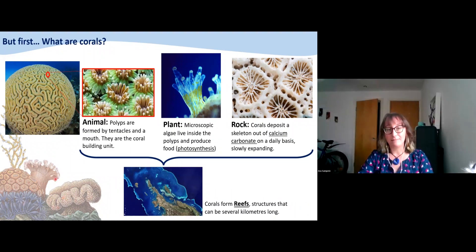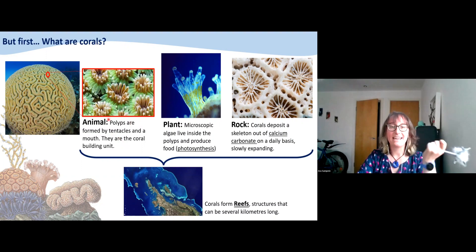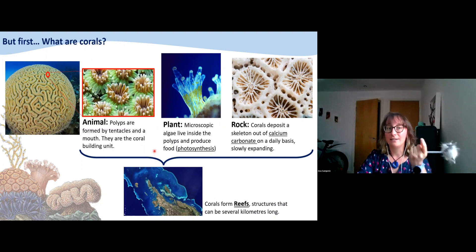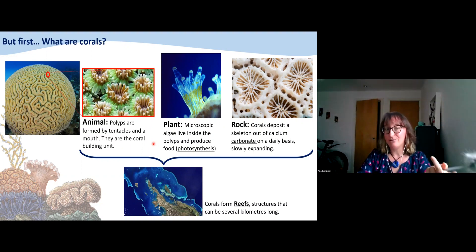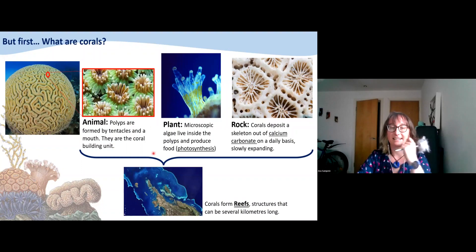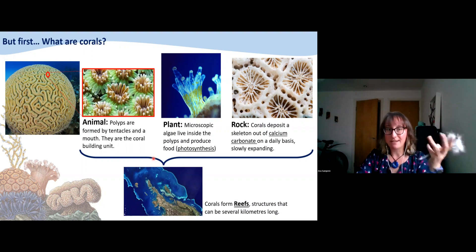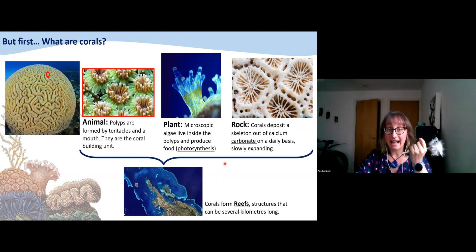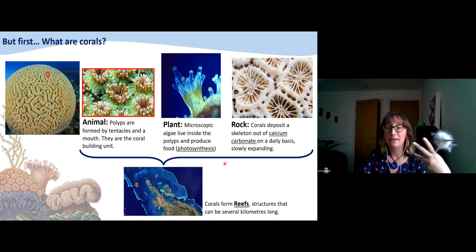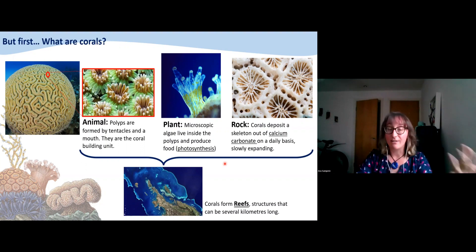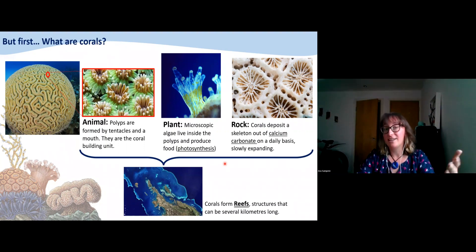Essentially, they are colonial or individual animals formed by polyps, which are every one of those tiny flower-like structures we can see in this picture. Polyps are the building unit of each coral, formed by different tentacles that can move, trap microorganisms and nutrients, and direct this capture into the mouth in the middle of those tentacles. Inside each polyp there are microscopic algae that we call zooxanthellae. These algae live inside the polyps and produce food with sunlight — photosynthesis, just like plants. They use inorganic nutrients and sunlight to produce organic nutrients, feeding the corals, and in exchange the coral protects the algae.